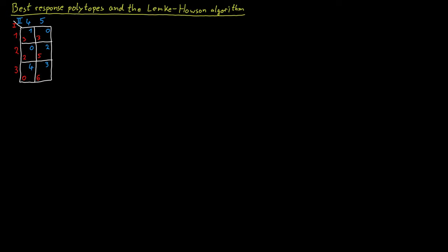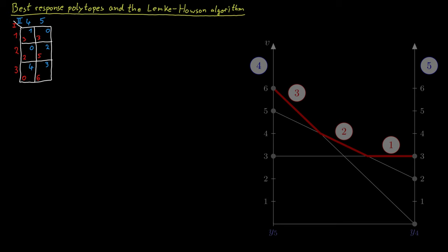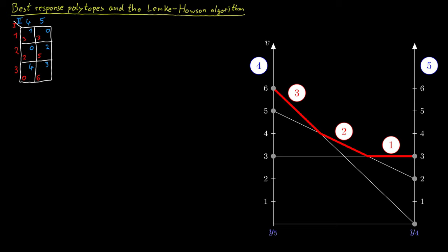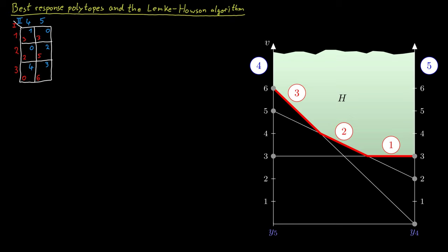We are drawing the best response diagram for player one, which looked like this: we had the strategy simplex of player two, which was just a line because player two only has two strategies. We depict the expected payoff for player one for each of the three strategies that player one has. What I'm now interested in is the area above the upper envelope of those three lines. Let's call this H — this is called the best response polyhedron. We can describe this set H algebraically.